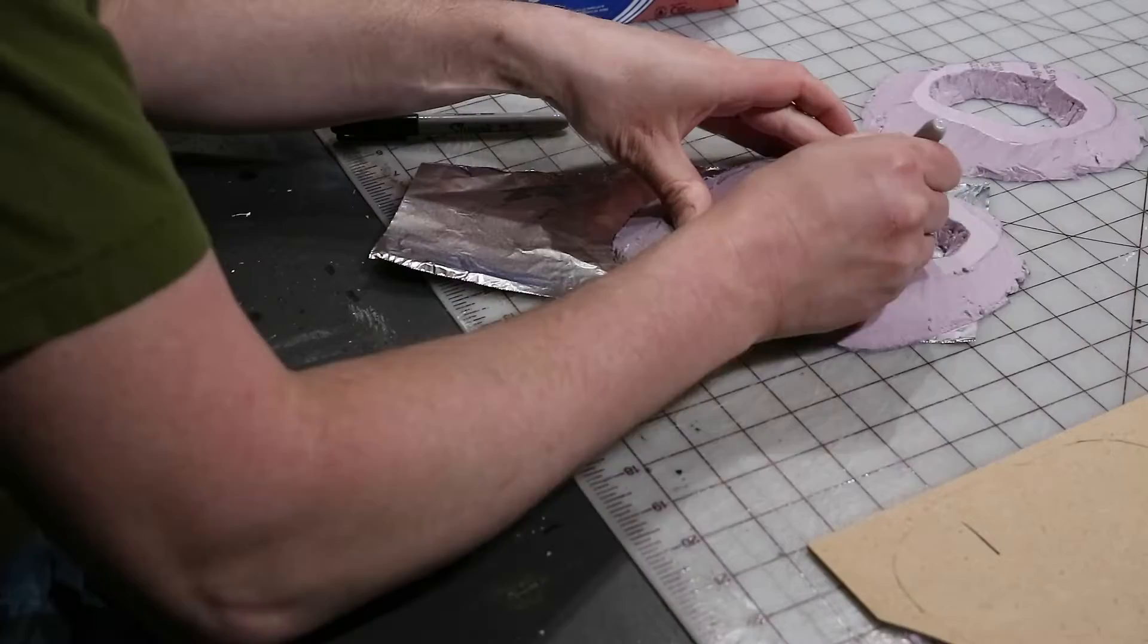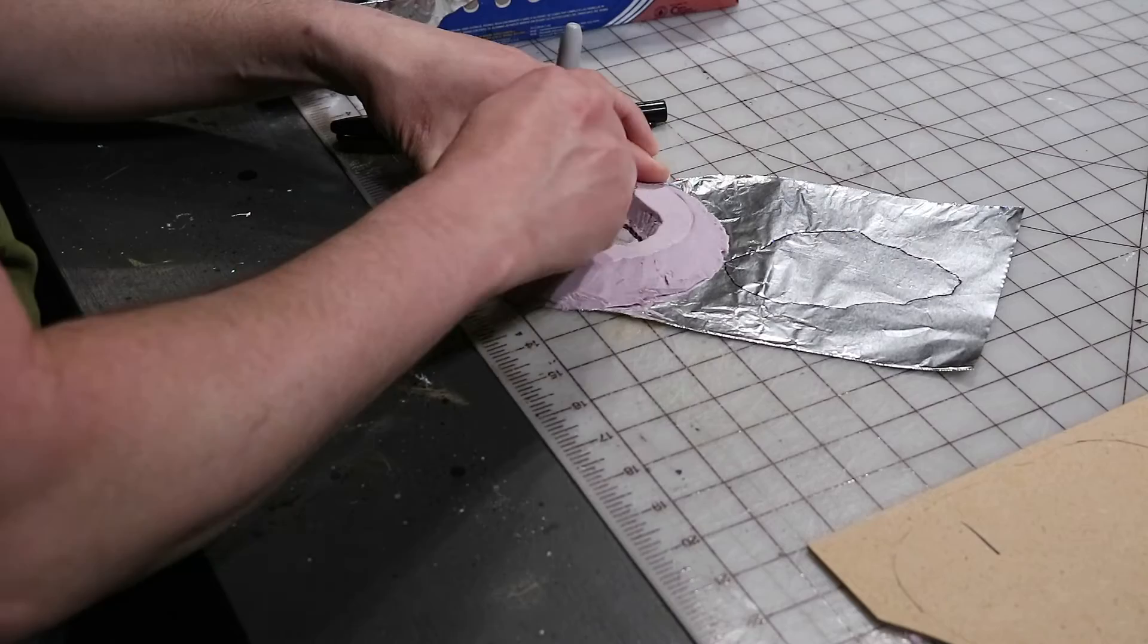Now we're going to grab some tin foil while we still have the loose pits and trace out the inside. This will be the guide for making the grubs later on.